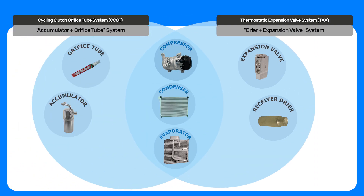On the orifice tube system, you have a cycling pressure switch that monitors the low pressure side of the system. If the pressure drops too low, it's going to cut the compressor off and keep it from freezing up your evaporator.